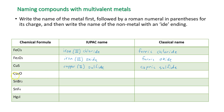For Cu₂O: oxygen has a charge of negative 2. With two coppers balancing that negative 2 charge, each copper would have a charge of positive 1. So the IUPAC name is copper(I) oxide, and the classical name is cuprous oxide — because it's the lower charge.